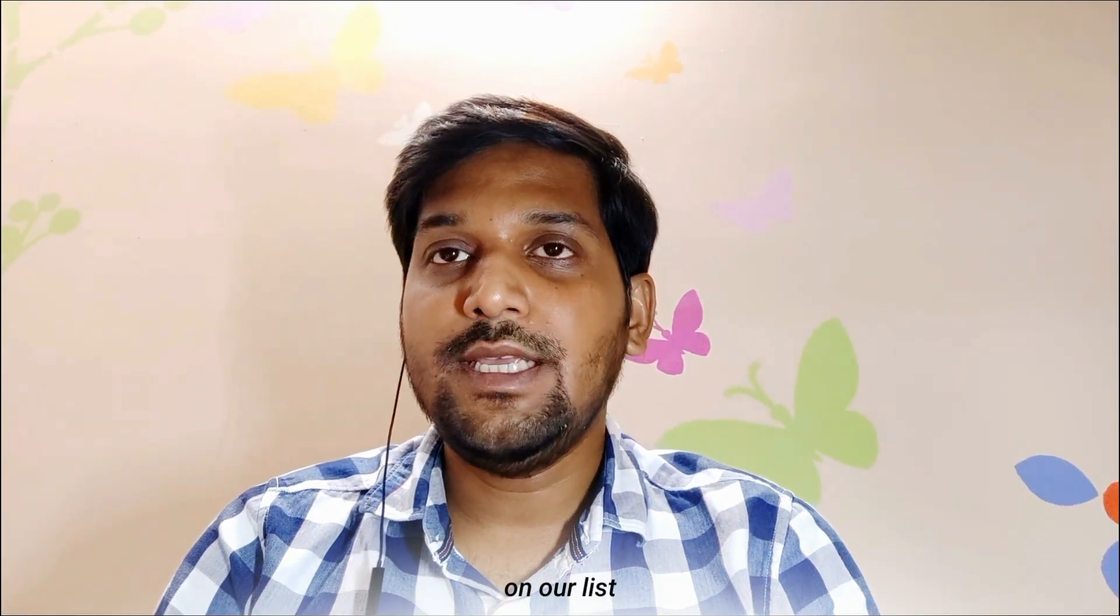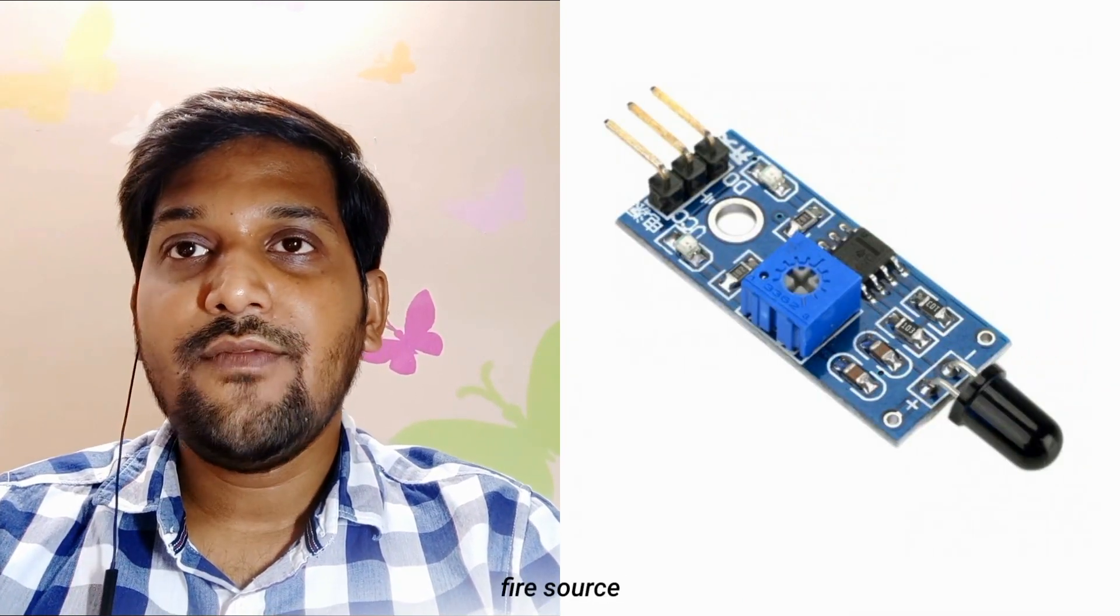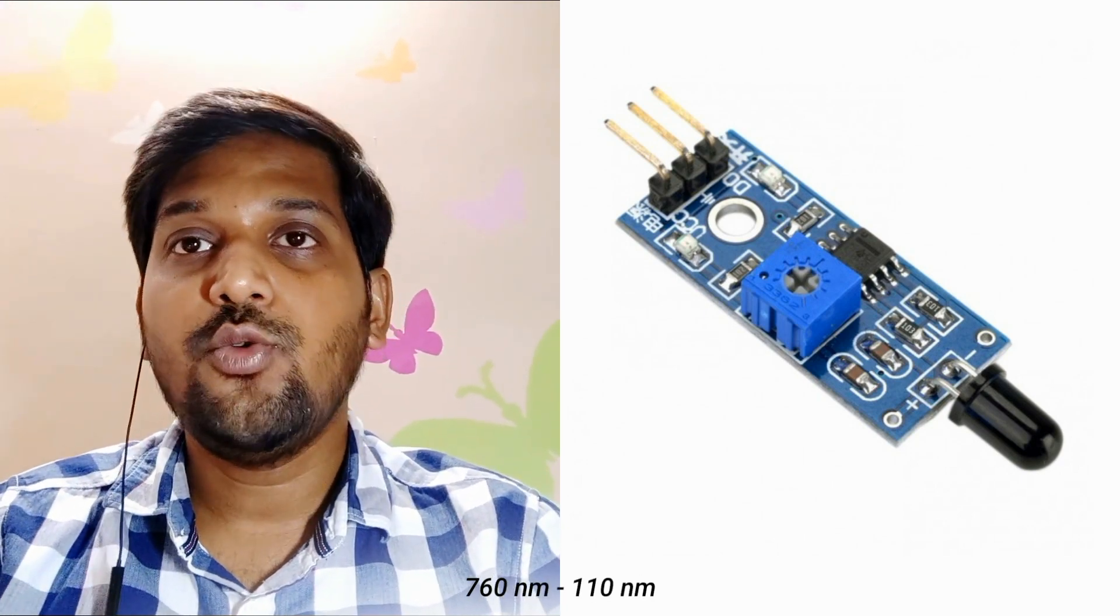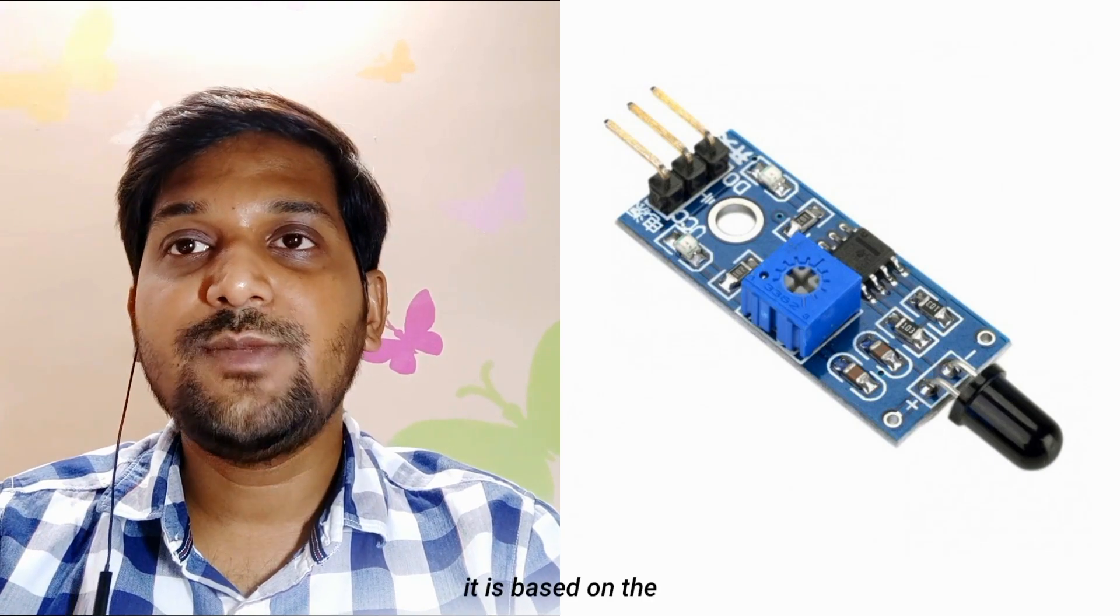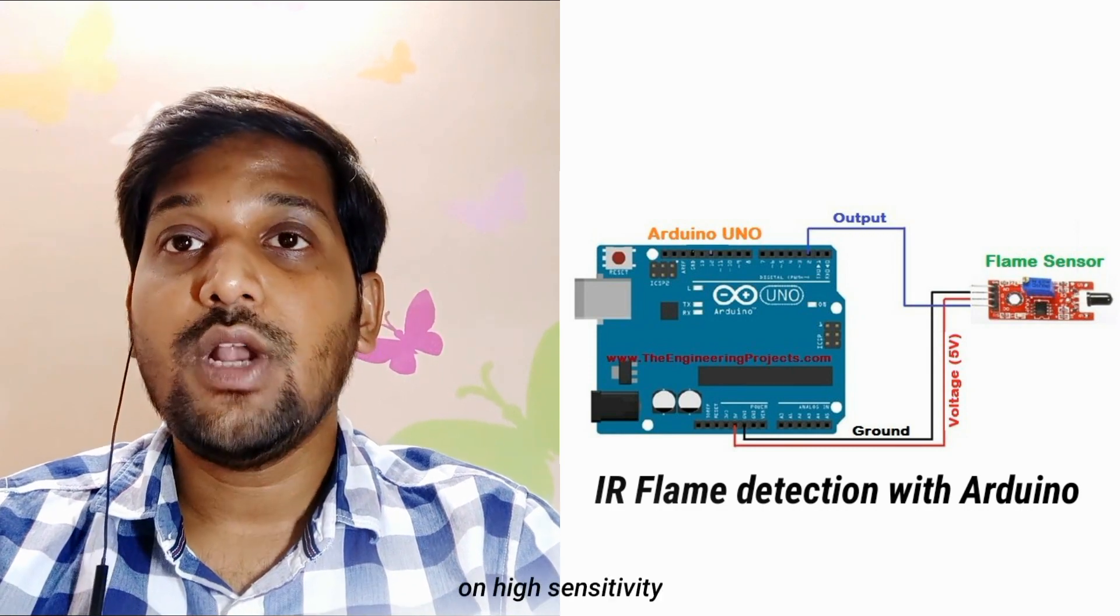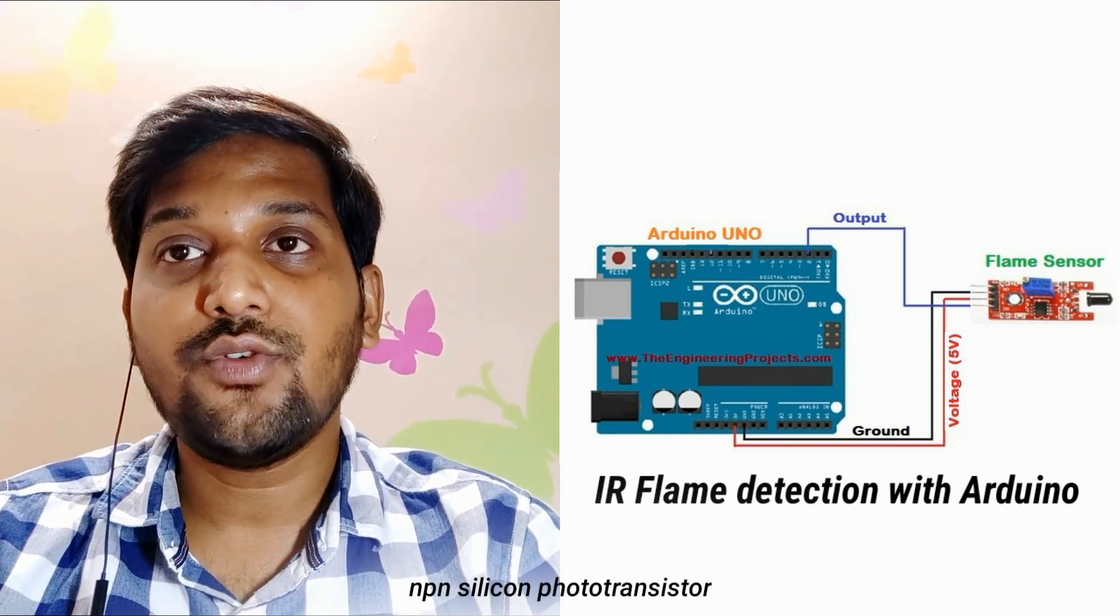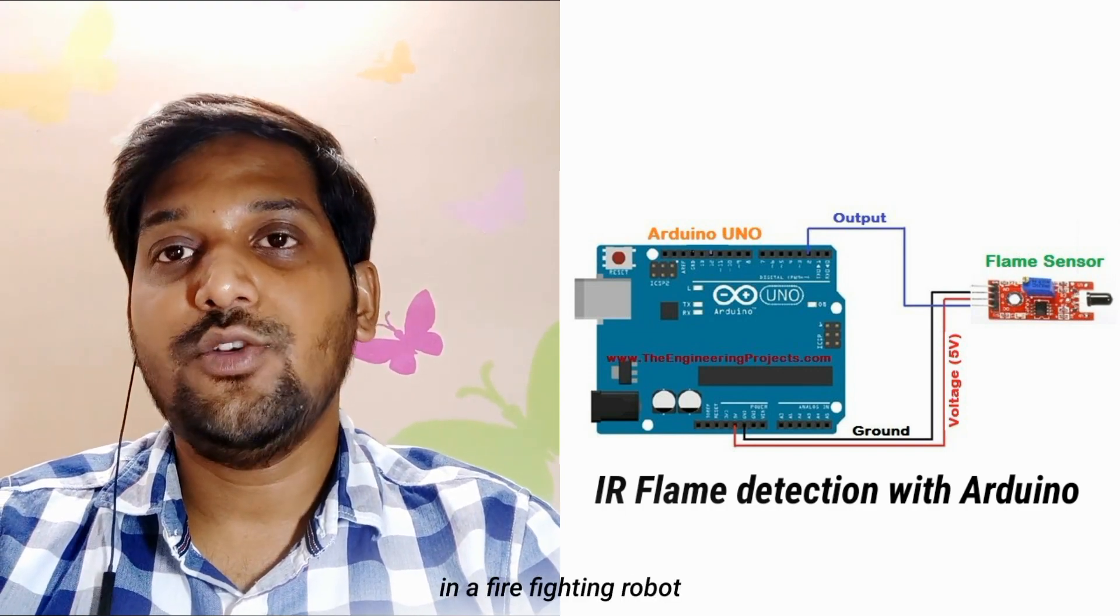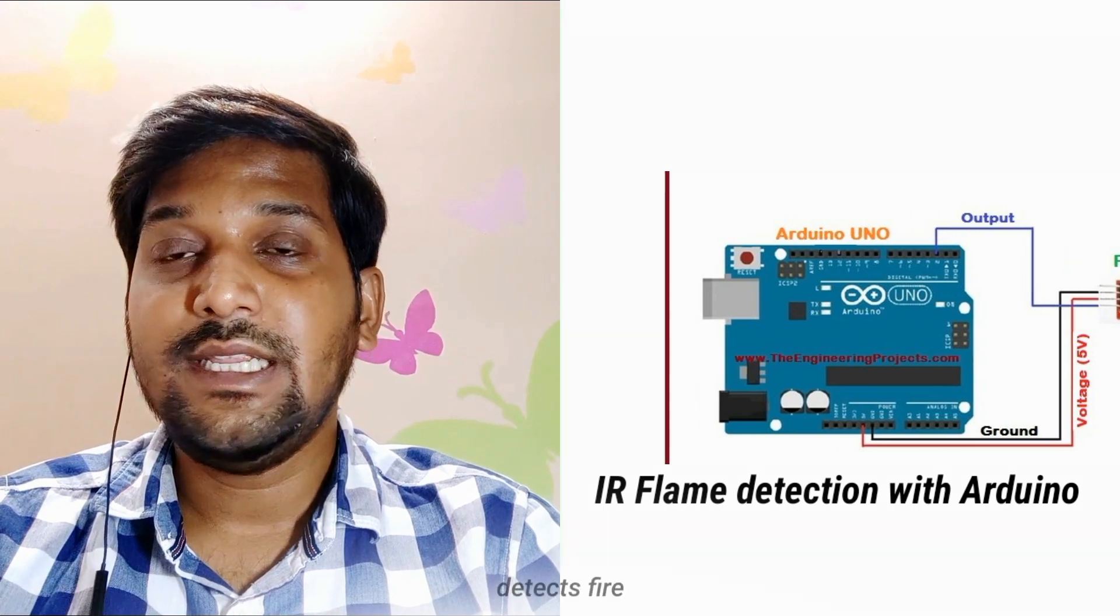The next one on our list, IR flame sensor. This flame sensor can be used to detect fire source or other light source of the wavelength in the range of 760 nm to 1100 nm. It is based on the YG1006 sensor which is high speed and high sensitivity NPN silicon phototransistor. The sensor can be used as a great addition in a firefighting robot. When the sensor detects fire, the signal LED will light up and the DO pin goes low.